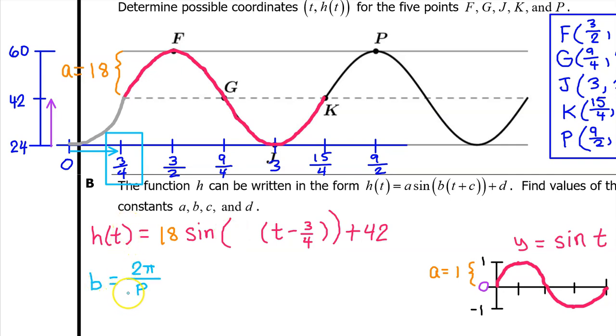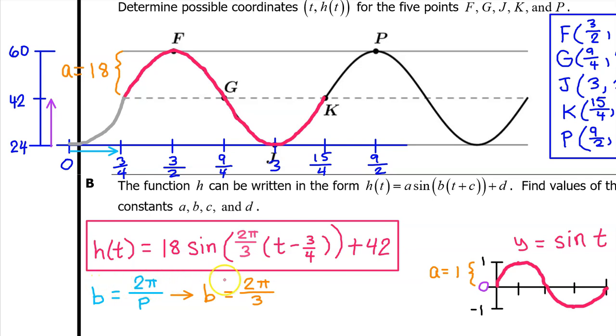I want you to memorize this b value formula, which works for sine functions and cosine functions. The b value is two pi divided by the period. In this case, we found that the period was three. So the value of b is two pi over three, and we can just fill that in right here. That's it for part b.